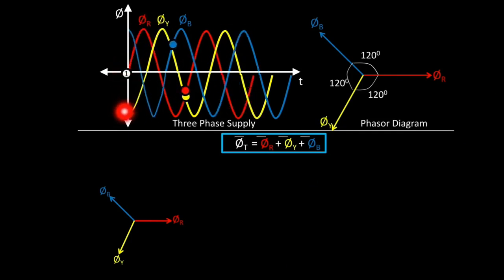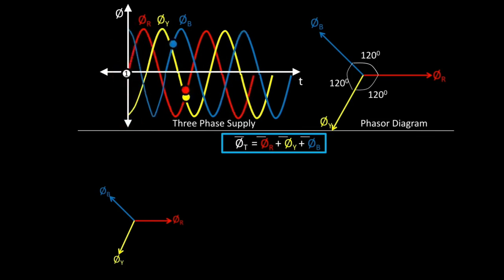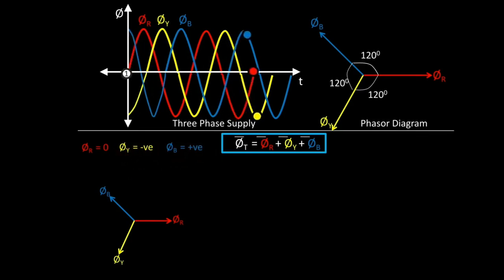Then φY is on the downside, so it is negative. And φB is upward, so it is positive. So at instant 1, we have φR = 0, φY = negative, and φB = positive. If we want to add these three fluxes — φR + φY + φB — since φR is 0, its phasor can be removed. Now φY is negative.